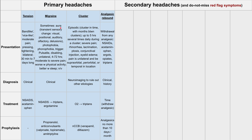Next are cluster headaches. These present as episodic in nature. The name comes from the fact that these headaches cluster in time — there are usually months between clusters of headaches. During a cluster period, they can last up to five hours and can happen several times daily. In between clusters, the patient might have no pain or symptoms at all.